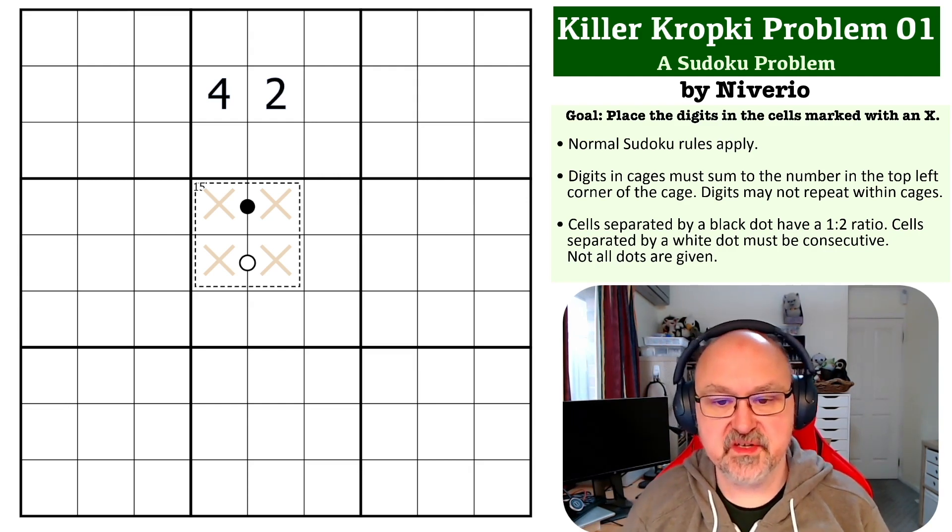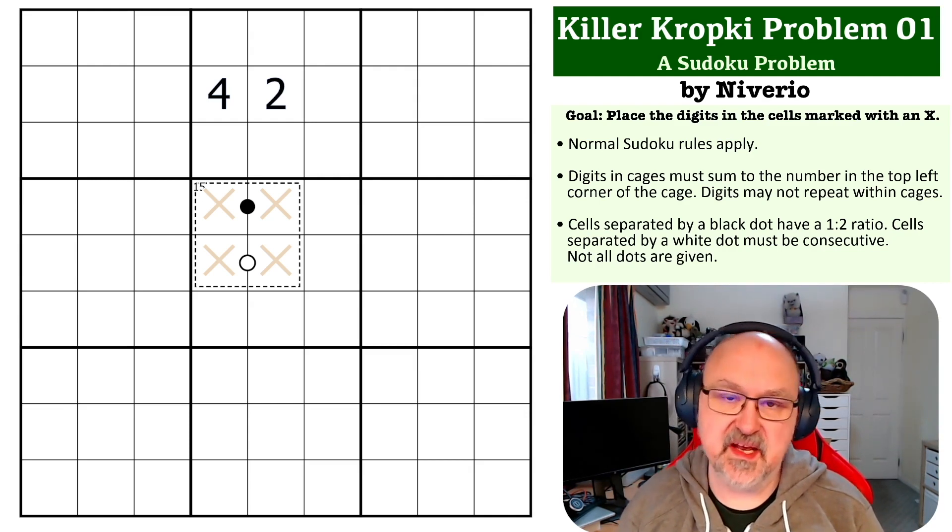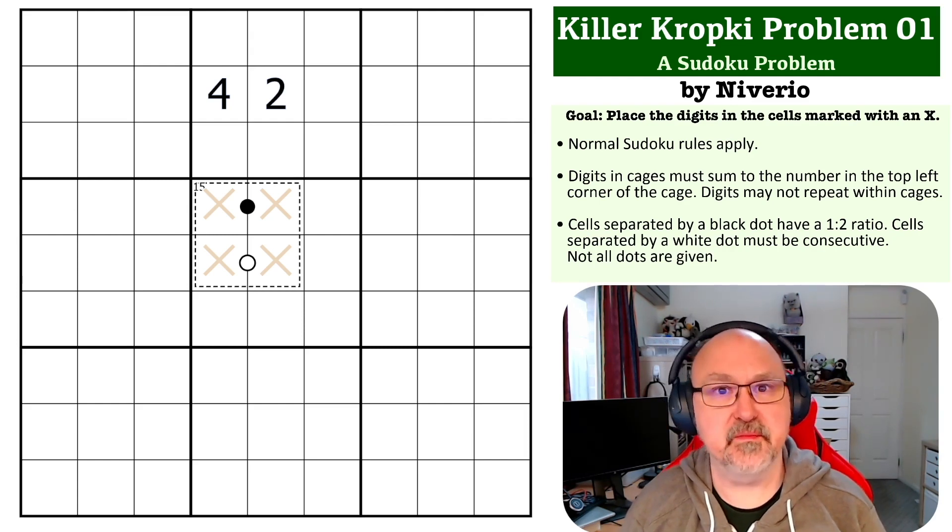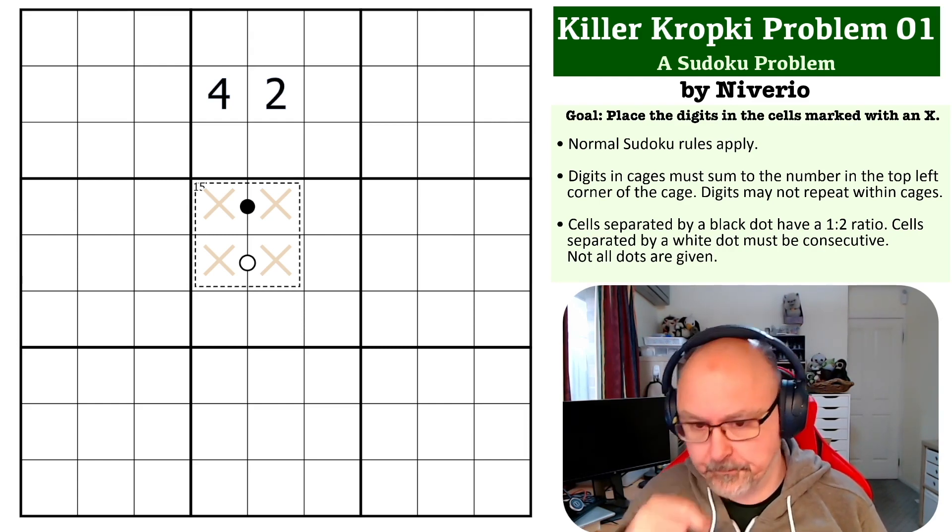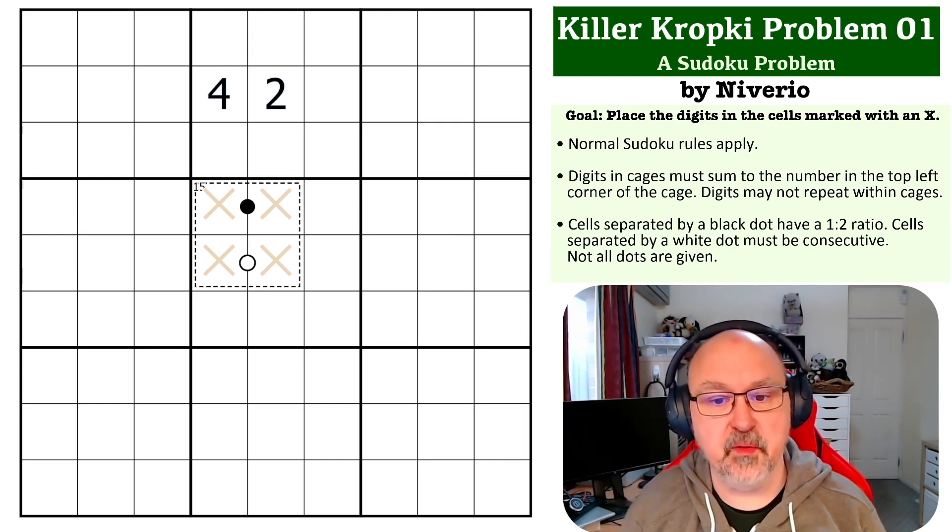With this one, you need to place the digits in cells marked with an X, same as with all of them so far. There'll be a link to the problem below where you can try this if you want to try it on a grid.